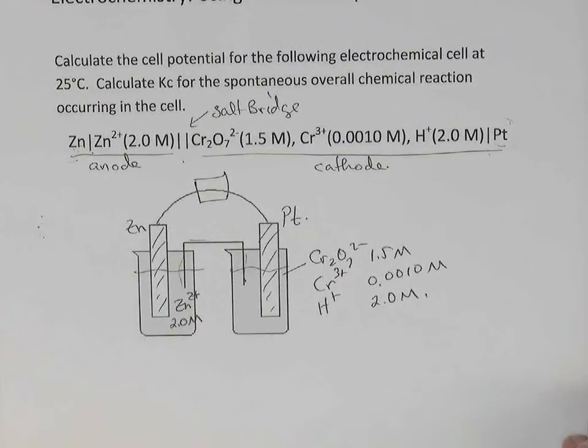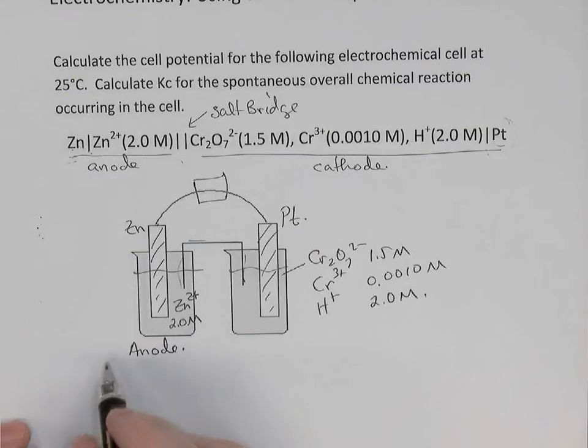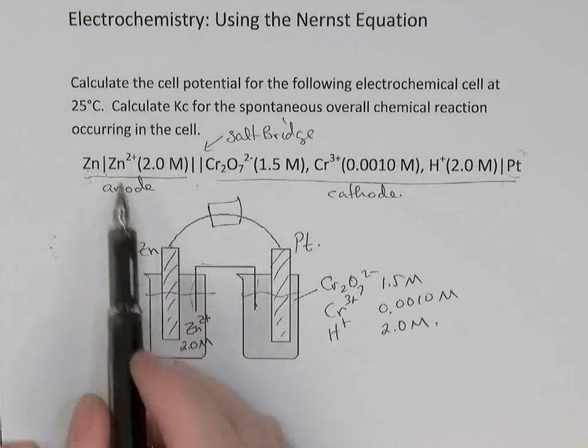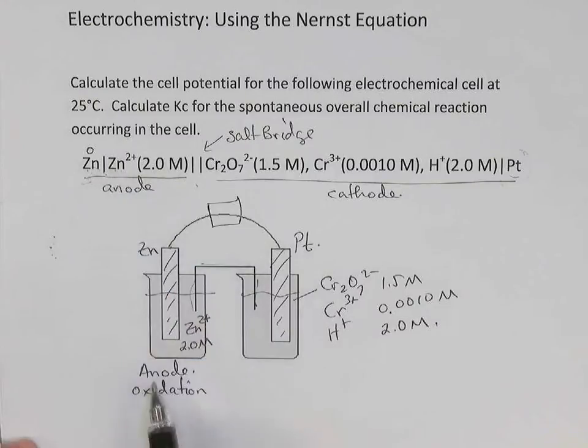To do that, let's first find the standard cell potential, E0. We know that on the left, this is our anode. And so we know that the reaction there is an oxidation reaction. Oxidation always occurs at the anode. And so looking back at the line notation, we think of oxidation numbers. Zinc is starting at 0, and going to 2+, there is an oxidation reaction.